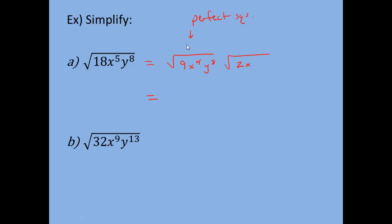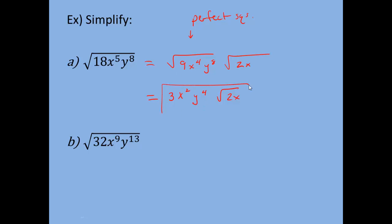Once we have that, we evaluate the first square root — the second one can't change because it has non-perfect squares. The square root of 9 is 3. The square root of x to the 4th: divide the exponent by 2, giving x to the 2nd. Then y to the 8th divided by 2 gives y to the 4th. And the square root of 2x stays as √(2x). Notice we don't put a square root symbol over the first group because we took the square root and did the operation. The answer is 3x²y⁴√(2x).